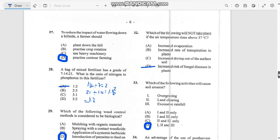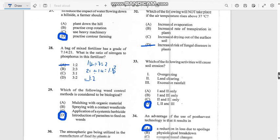Number 32: Which of the following will not take place when temperature rises above 37 degrees Celsius? The answer is increased risk of fungal disease in plants.